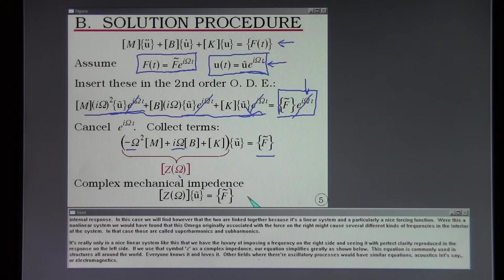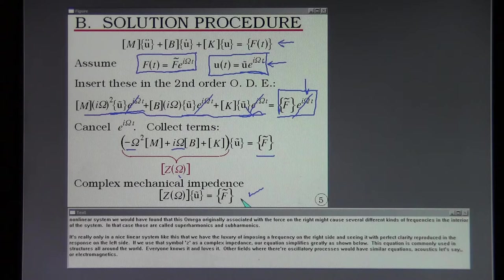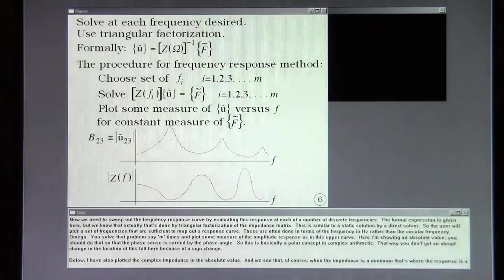If we use that symbol Z as a complex impedance our equation simplifies greatly as shown below. This equation is commonly used in structures all around the world. Everyone knows it and loves it. Other fields where there are oscillatory processes would have similar equations. Acoustics let's say or electromagnetics.